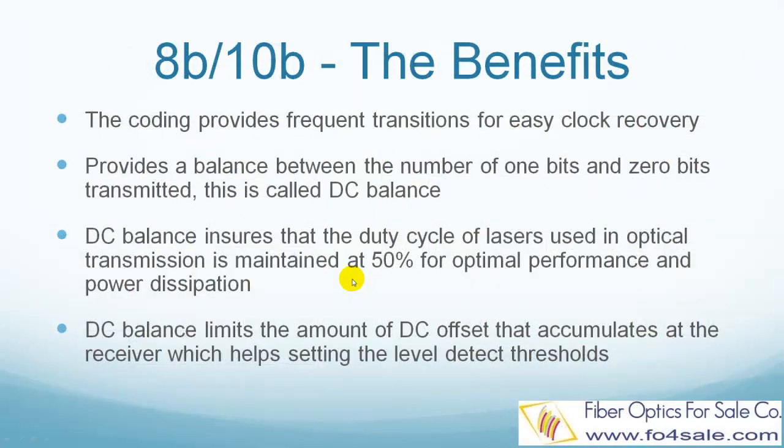8B10B line coding has many benefits than directly transmitting baseband data. Here is a few listed. 8B10B coding provides frequent transitions for easy clock recovery on the receiver side. It provides a balance between the number of 1 bits and 0 bits transmitted. This is called DC balance. DC balance makes sure the optical laser is maintained at around 50% duty cycle for best performance and power usage. DC balance puts a limit on the DC offset on the receiver side, which helps maintain a good level detect thresholds.